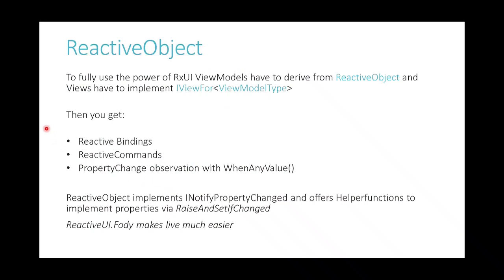One of the base objects in Reactive UI is ReactiveObject. Typically you derive your view models from ReactiveObject. The link to your view is done by having your view implement an interface for the view model type. For Xamarin.Forms, there are predefined views that already do this: ReactiveContentPage, ReactiveTabPage — for every page type and most view types, including ReactiveViewCell. Using these gives you reactive bindings, commands, and property change observations.